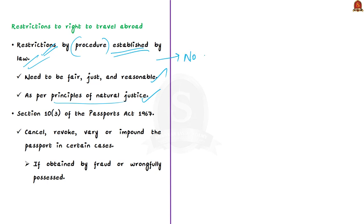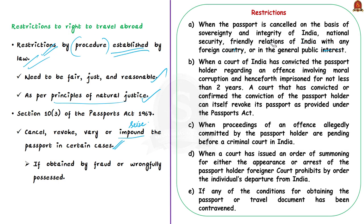There is no specific provision in the Indian Constitution regarding restrictions on the right to travel abroad, but the Passports Act of 1967 under Section 10(3) specifies circumstances where passport authorities may cancel, revoke, vary, or impound a passport. One such circumstance is when a passport is obtained by fraud or wrongfully possessed. COVID-related restrictions also provide context for this op-ed discussion.